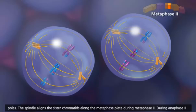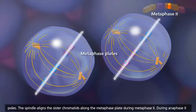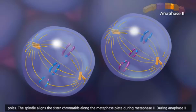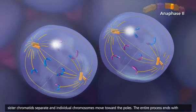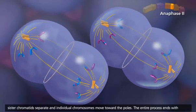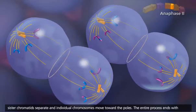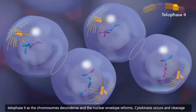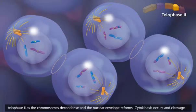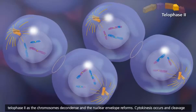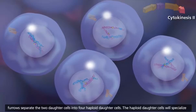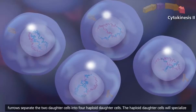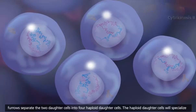The spindle aligns the sister chromatids along the metaphase plate during metaphase II. During anaphase II, sister chromatids separate and individual chromosomes move toward the poles. The entire process ends with telophase II, as the chromosomes decondense and the nuclear envelope reforms.